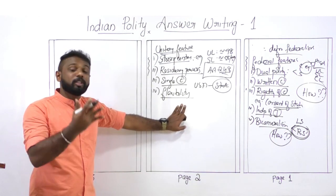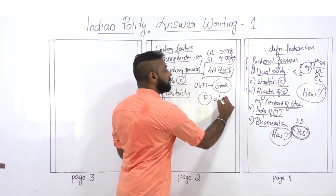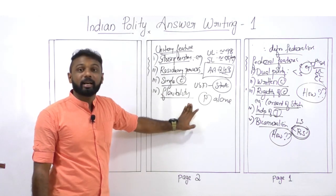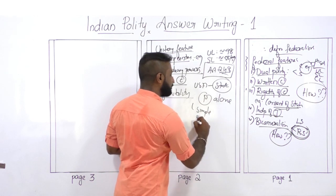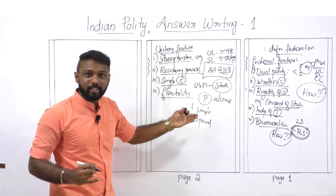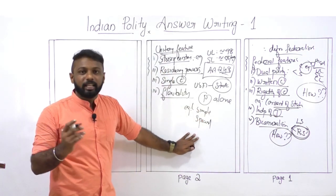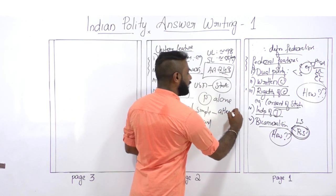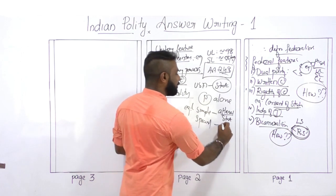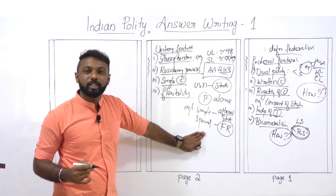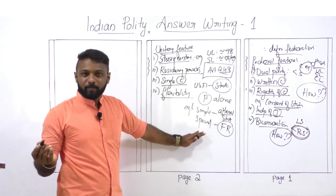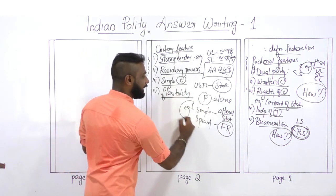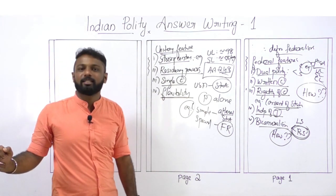Another unitary feature is flexibility of the Constitution. Many provisions can be amended by the unilateral action of Parliament alone; only some provisions require the consent of states. For example, under Article 3, the boundaries of states can be altered by Parliament using a simple majority. Similarly, provisions of fundamental rights can be amended by Parliament using a special majority, without state consent, showing a centralizing tendency.